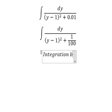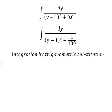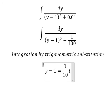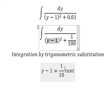So I will put y minus 1 equal to 1 over 10 tan(t). Because if I put this substitution in here, we have 1 over 100 tan²(t). With 1 over 100, we can do factorization.